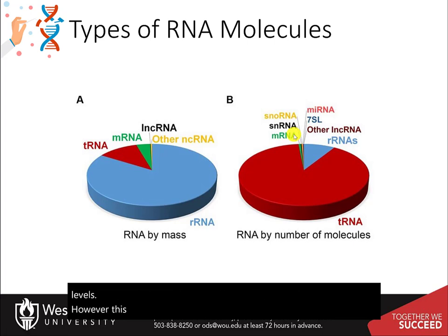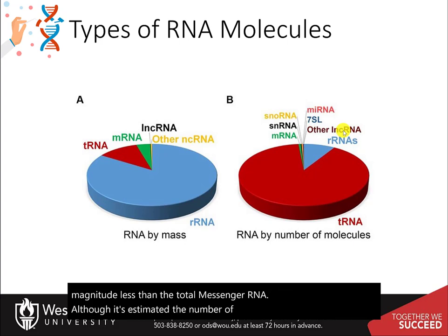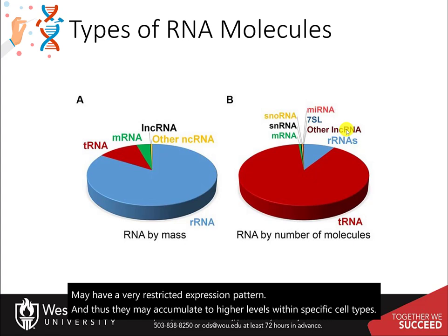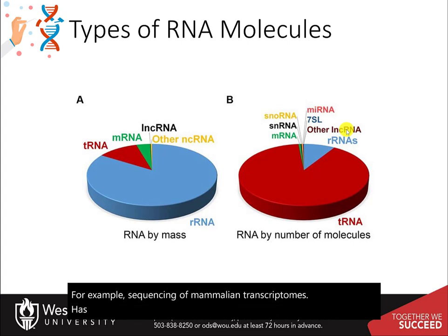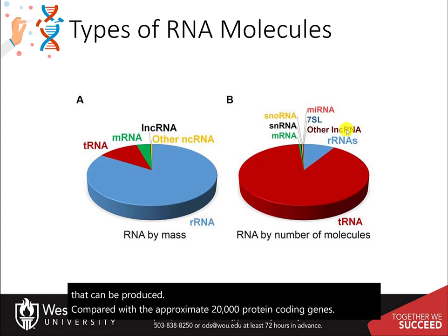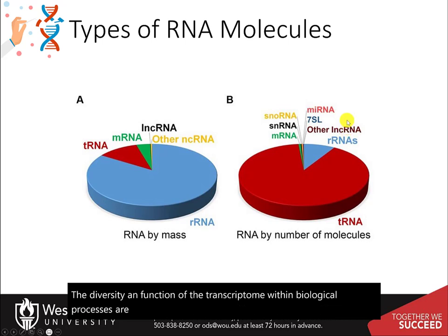Certain small RNAs such as microRNAs can be present at very high levels; however, this appears to be cell type dependent. Long nuclear RNAs are present at levels two orders of magnitude less than total messenger RNA, and may have a very restricted expression pattern, accumulating to higher levels within specific cell types. Sequencing of mammalian transcriptomes has revealed more than 100,000 different long nuclear RNA molecules that can be produced, compared with approximately 20,000 protein-coding genes. The diversity and function of the transcriptome within biological processes are currently a highly active area of research.